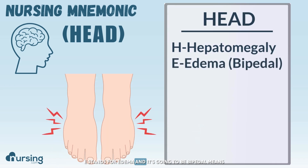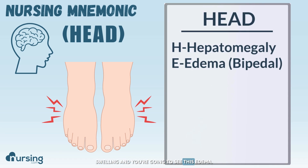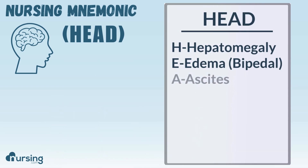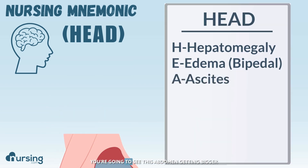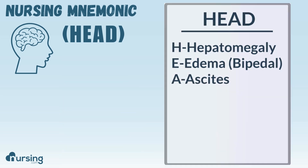E stands for edema — it's going to be bipedal, meaning both feet are going to develop swelling and you're going to see this edema. The A stands for ascites. You're going to see the abdomen getting bigger and you'll see a little bit of a fluid wave happening there.